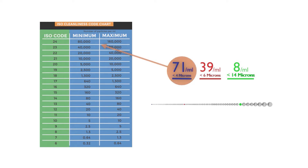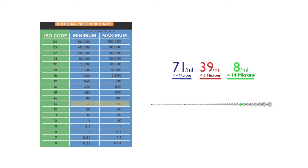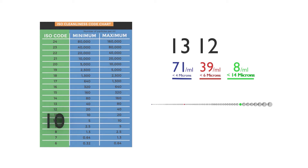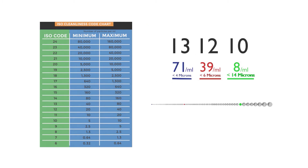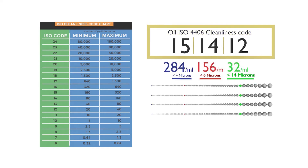For instance, in this example, the greater-than-4-micron count of 71 particles per milliliter falls in the range between 40 and 80 and is therefore assigned the ISO code of 13. Correspondingly, the greater-than-6-micron count of 39 falls between the range of 20 and 40 and is assigned the ISO code of 12. And finally, the greater-than-14-micron count of 8 falls between the range of 5 and 10 and is therefore assigned the ISO code of 10. These three numbers — arranged from greater-than-4-micron to greater-than-14-micron — constitute the oil's ISO 4406 cleanliness code, with each progressive number indicating a doubling of contaminant from the previous.